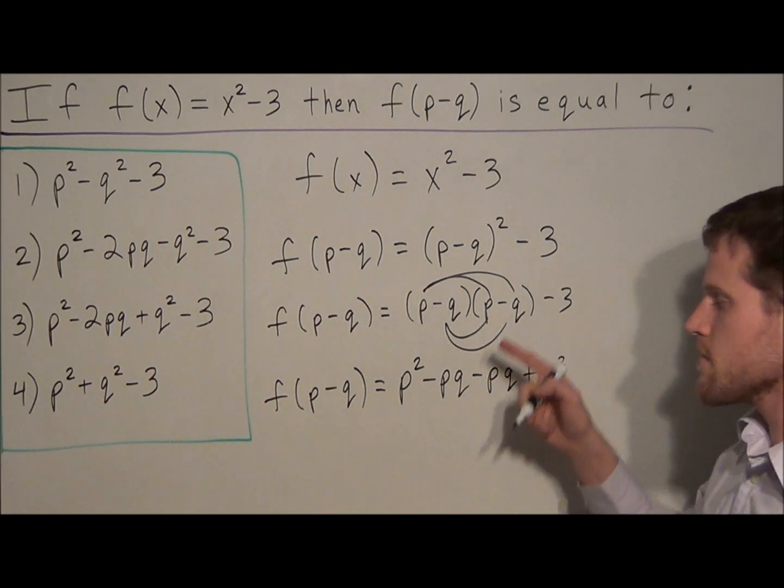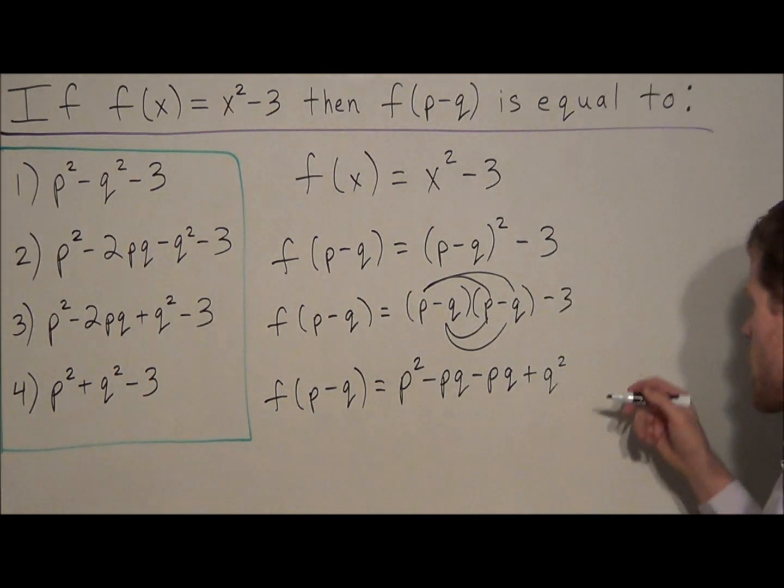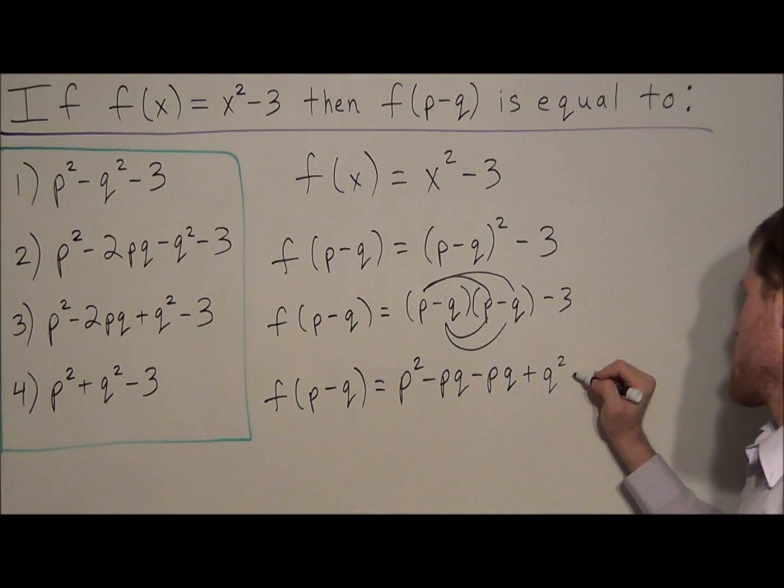Remember, when we multiply two negatives, it turns positive. And we have the minus three on the end. That's not going anywhere.